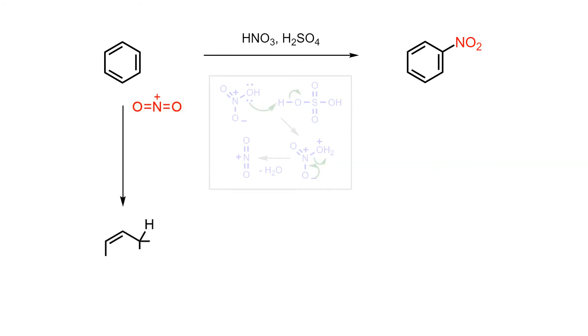Even though benzene is quite stable, exposing it to nitronium ions forces it to act as a nucleophile to give the non-aromatic sigma complex as an intermediate.